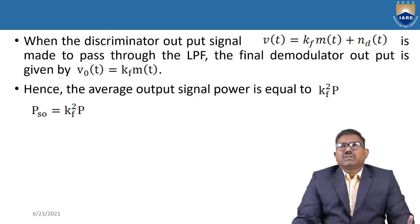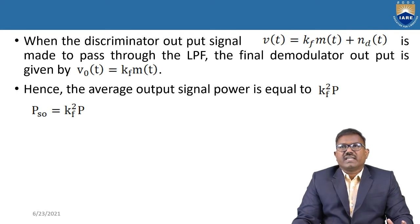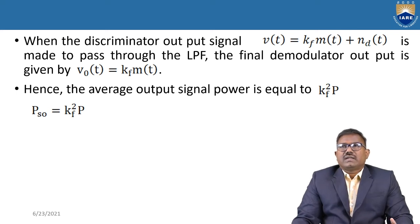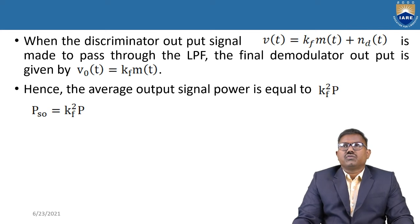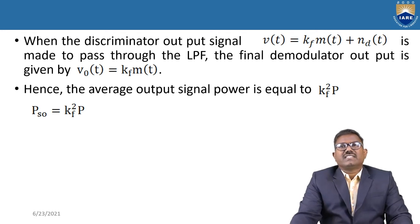When the discriminator output is passed through the LPF, the demodulated output v₀(t) = Kf·m(t), because the LPF allows only the signal; nd(t) is a noise component at high frequency and is filtered out by the low pass filter. Finally, the average output signal power is equal to Kf²·P.